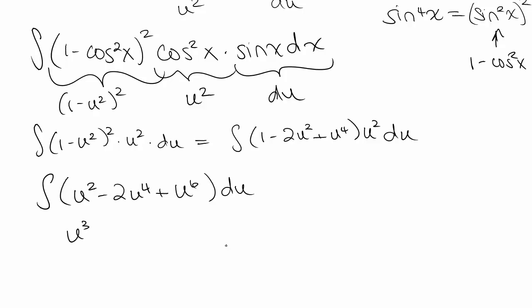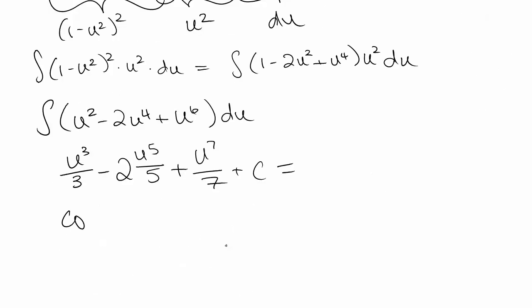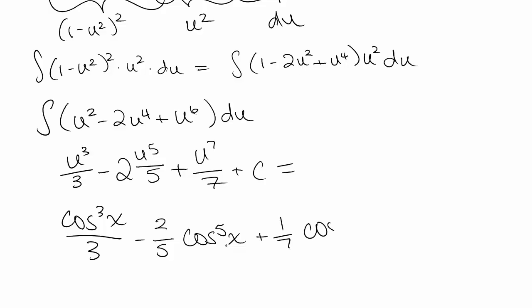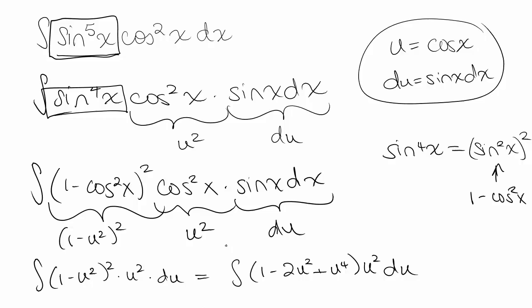Integrating gives us u cubed over 3, minus 2u to the fifth over 5, plus u to the seventh over 7, plus C. Converting back to x's, recalling that we used u equals cosine of x, we get cosine cubed of x over 3, minus 2/5 cosine to the fifth of x, plus 1/7 cosine to the seventh of x, plus C. When sine has an odd power and cosine has an even power, we can just use the opposite substitution — let u equal cosine of x — and the same technique works with sine and cosine reversed.